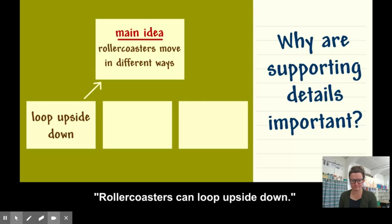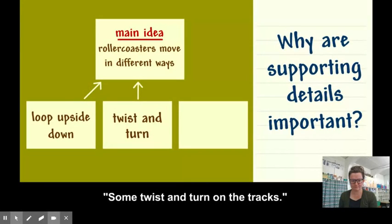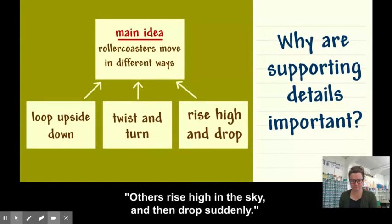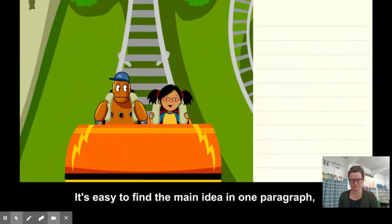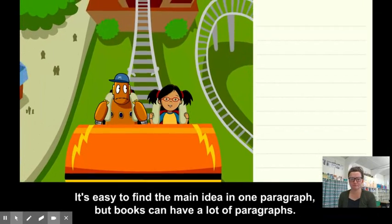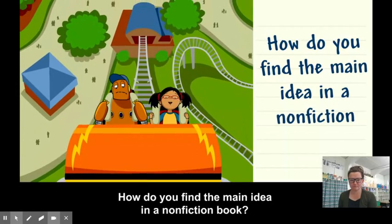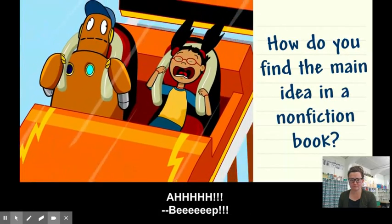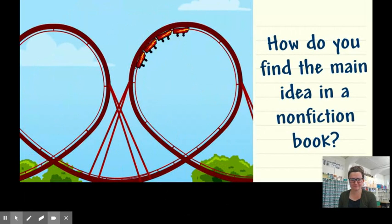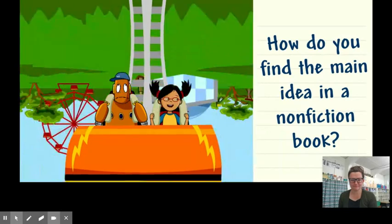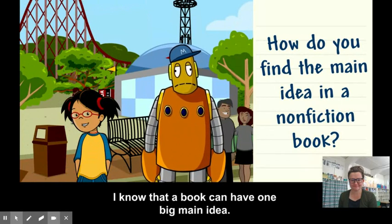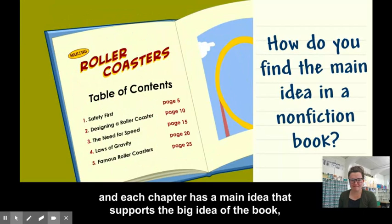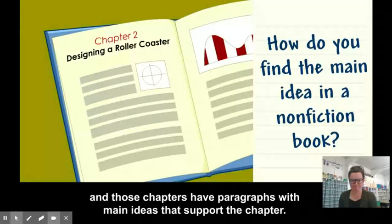Your paragraph has three supporting details that describe how roller coasters move: roller coasters can loop upside down, some twist and turn on the tracks, others rise high in the sky and then drop suddenly. It's easy to find the main idea in one paragraph, but books can have a lot of paragraphs. Each chapter has a main idea that supports the big idea of the book, and those chapters have paragraphs with main ideas that support the chapter.